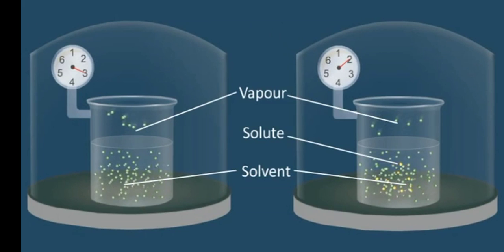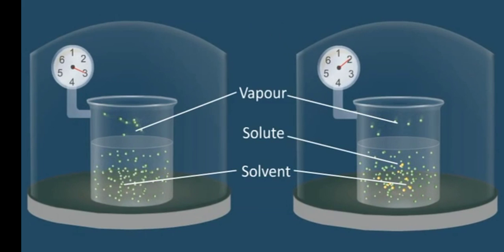However, the vapor pressure of the solution is found to be less than that of the pure solvent. This occurs because the non-volatile solute molecules occupy certain surface area as shown in the animation. As a result, lesser number of solvent molecules will escape into vapors.